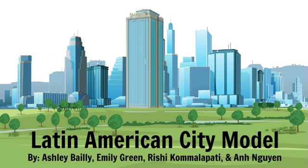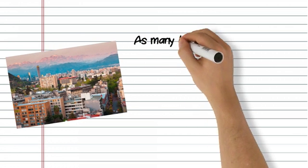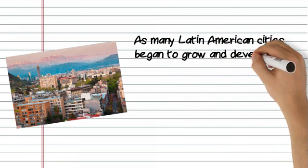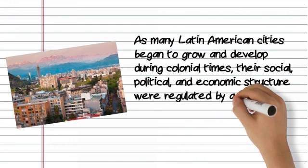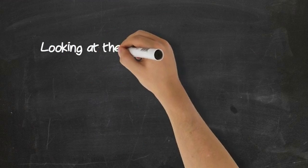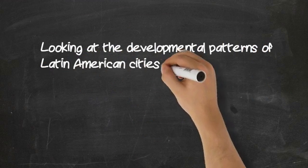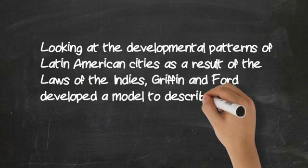The Latin American City Model was developed by geographers Ernest Griffin and Larry Ford in 1980 to describe the general structure of Latin American cities. As many Latin American cities began to grow and develop during colonial times, their social, political, and economic structure was regulated by a set of laws issued by Spain, called the Laws of the Indies. Looking at the developmental patterns resulting from these laws, Griffin and Ford developed a model applicable to almost all major Latin American cities.